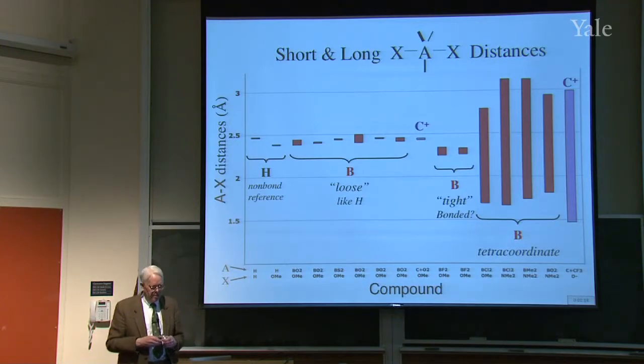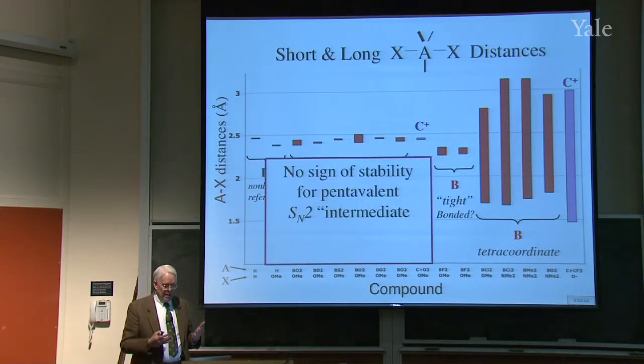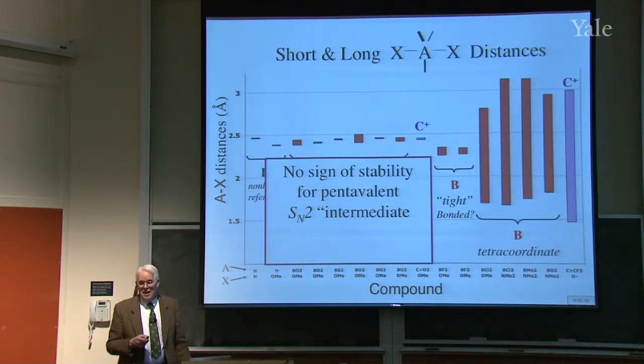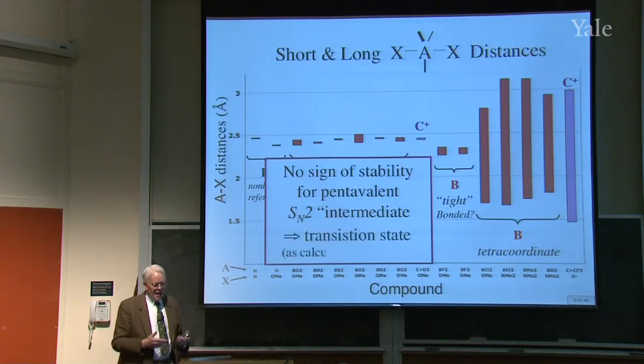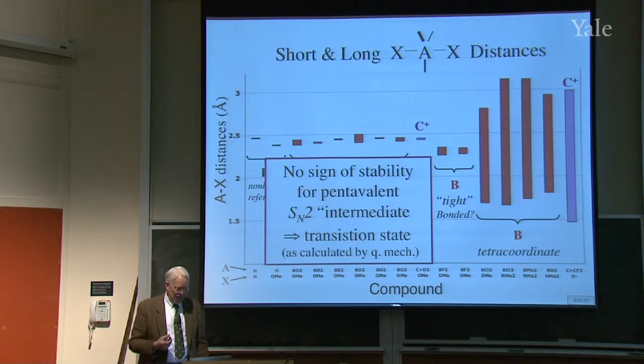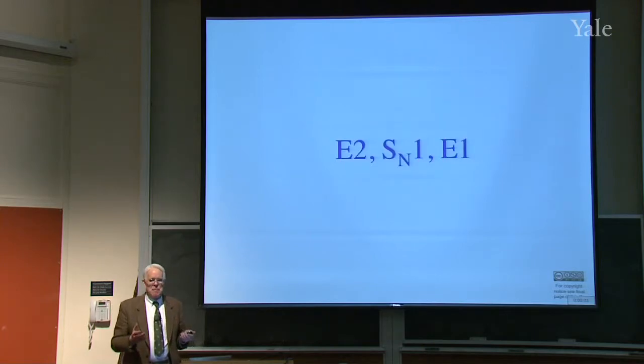So there's no sign from this exercise for a pentavalent intermediate of the SN2 sort being stable. It seems genuinely to be just the maximum on the way across. So it's a transition state, as calculated by quantum mechanics. That should give us a little more confidence in the reliability of quantum mechanics, which of course can't take into account all the neighbors around the molecule.